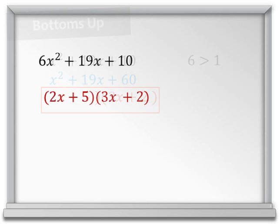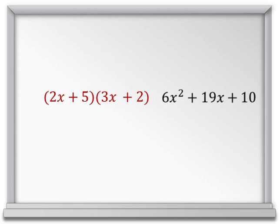Now how can we check that we factored correctly? We check by multiplying the two binomials using FOIL to see if its product is equal to what we started with.